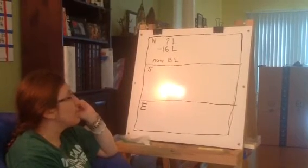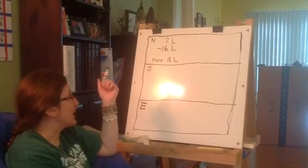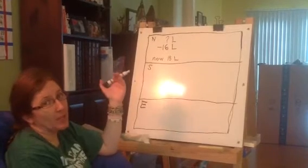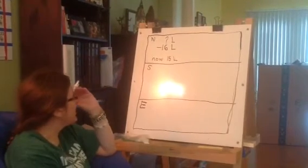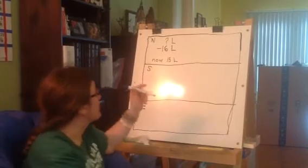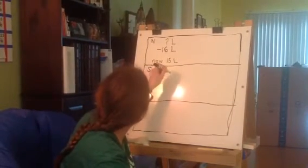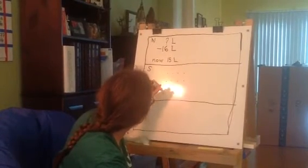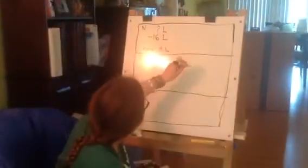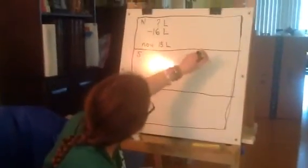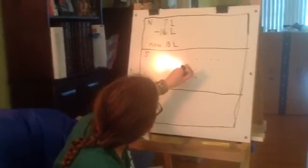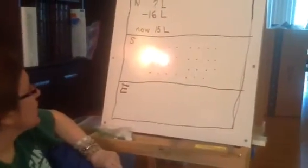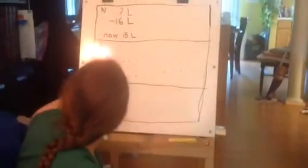Now, this problem does not have a big number in it. We don't know how many she started with at the beginning, and that would have been the big number since she's subtracting. So to find the big number, we need to add the two smaller numbers together — the 16 that Emily used to build her house and the 15 that Ms. Drass had left.